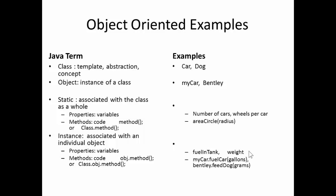An object is a particular instance of a class. So we can talk about my particular car, my dog named Bentley.